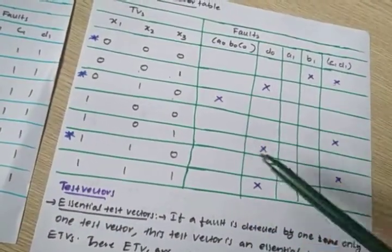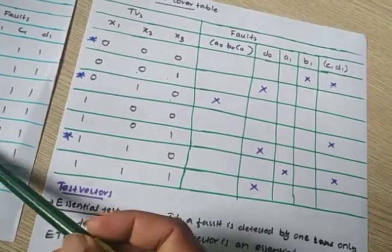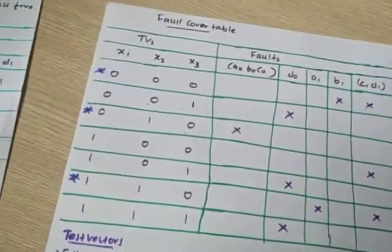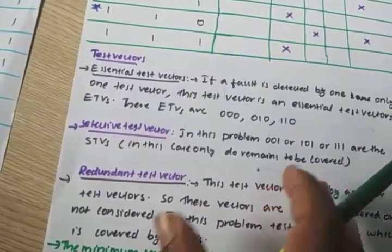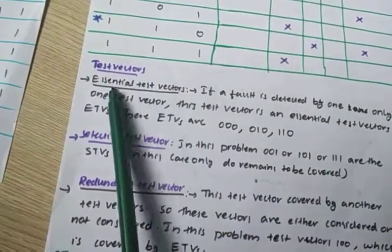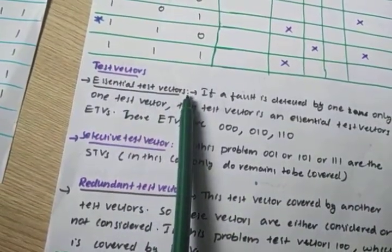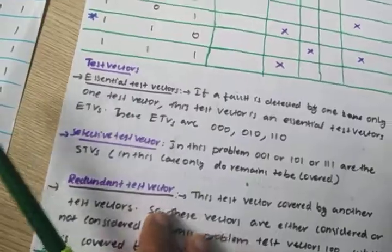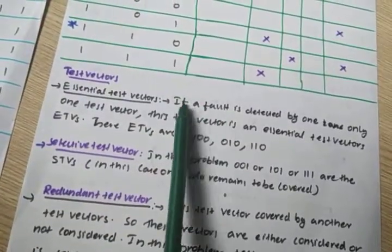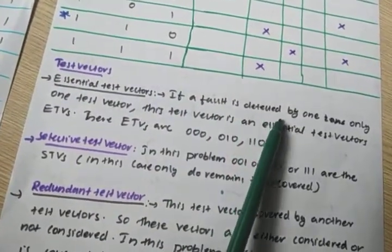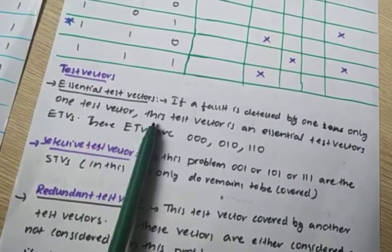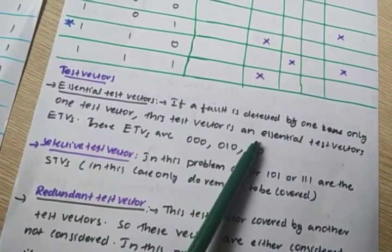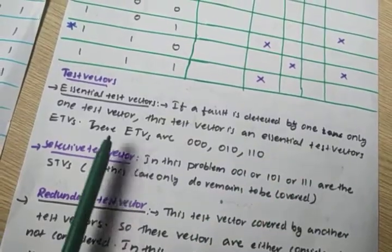We cross the entire stated table. This is the Fault Cover Table. Now we need to find out three types of test vectors: essential test vectors, selective test vectors, and redundant test vectors. An essential test vector is one where a fault is detected by one and only one test vector.